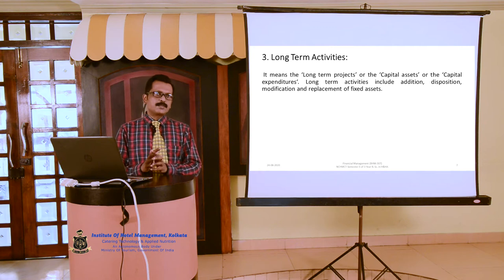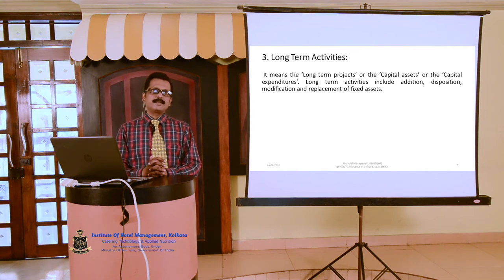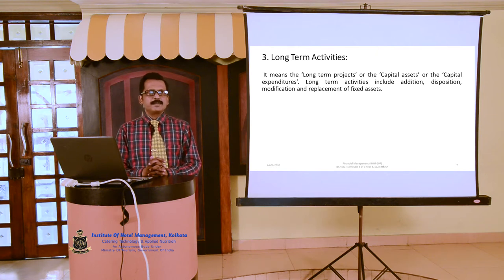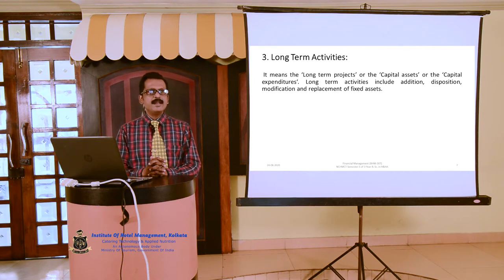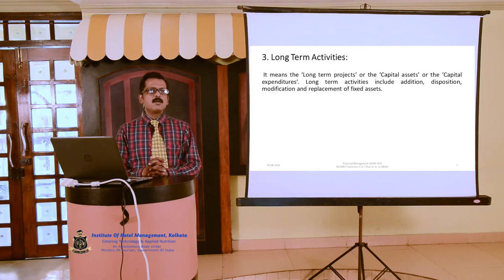Let us explain these terms. First, addition — addition of fixed assets means adding to or expanding a fixed asset. Suppose a business has a building; in addition to that, it requires to construct another building for use in the business. This is called addition to the fixed assets. Number two, disposition — disposition of fixed assets means the disposal or discarding of a fixed asset when it does not perform. Suppose a business has a machine which is not performing well and wants to dispose it off or discard it, so it will not be in further use. This is called disposition of the fixed assets.